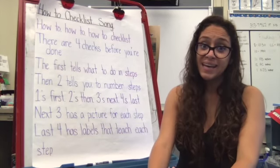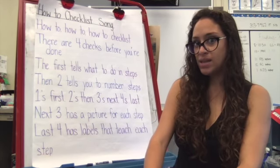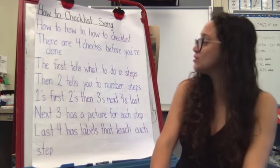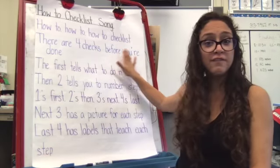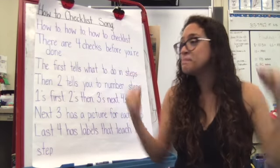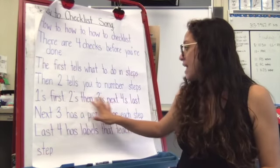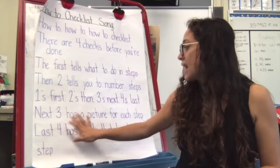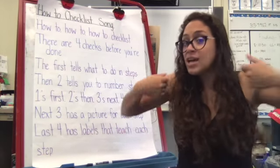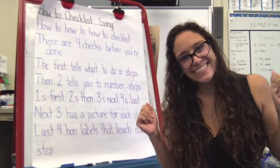So before we get started, we are going to sing our song. You ready? Okay. Ready, set, go. How-to, how-to, how-to checklist. There are four checks before you're done. The first tells what to do in steps. Then two tells you to number steps. One's first, two's then threes next, four's last. Next three has the picture for each step. Last four has labels that teach each step. How-to, how-to, how-to checklist. Yay.